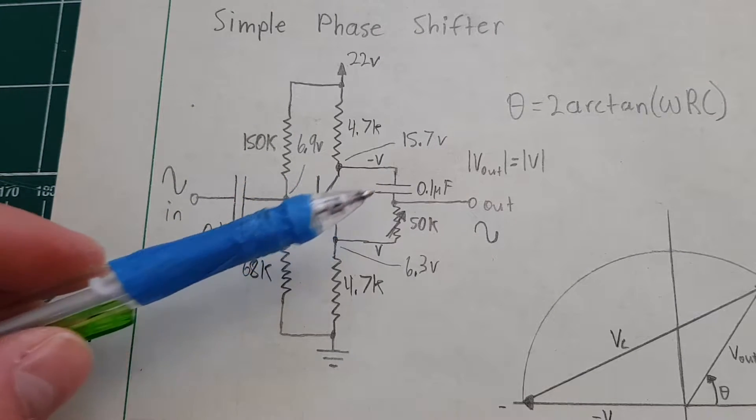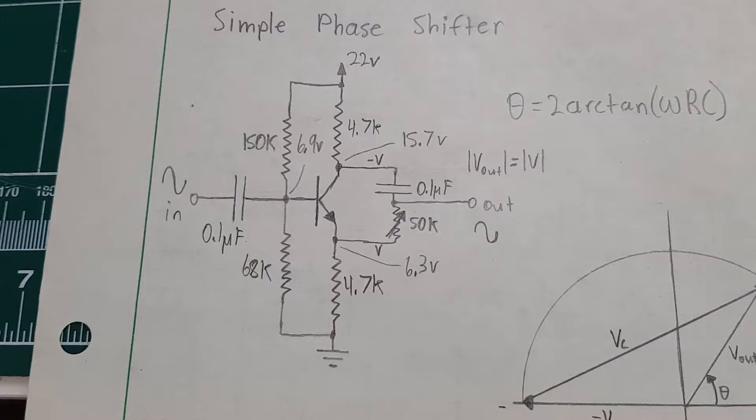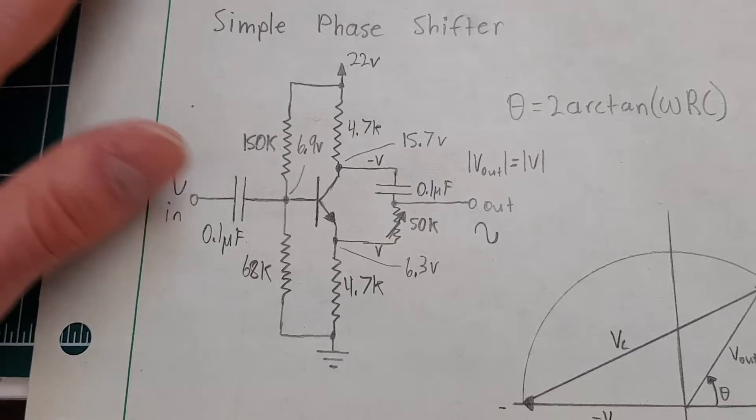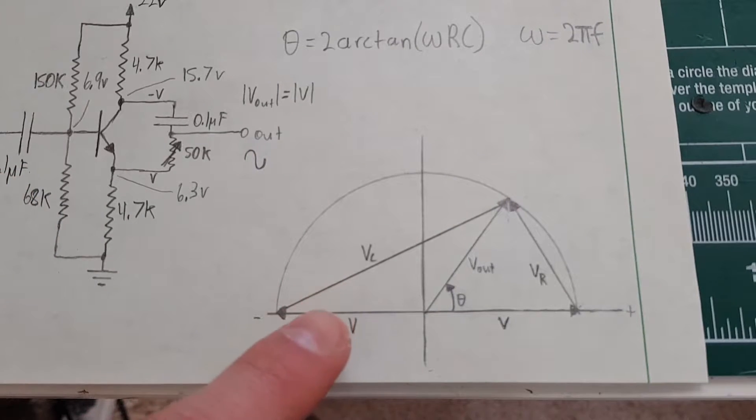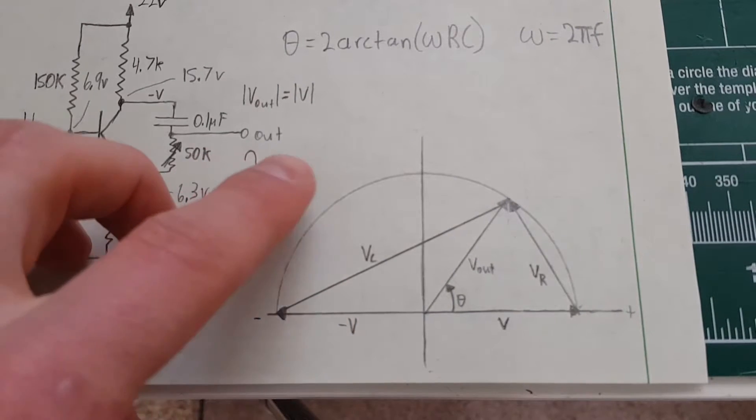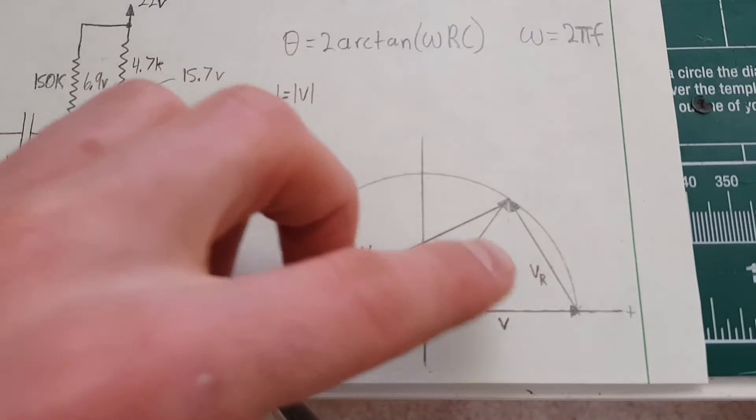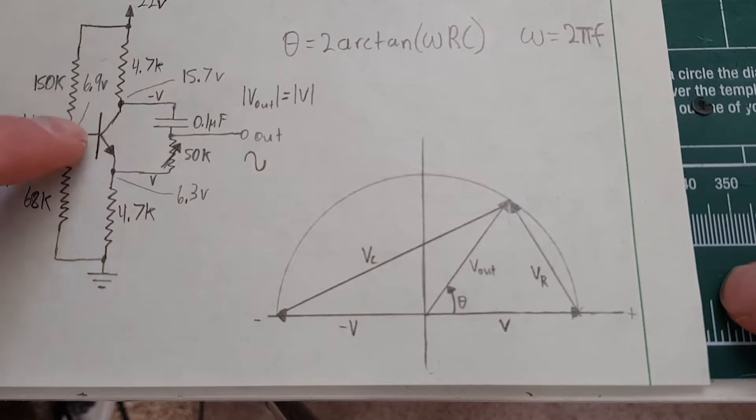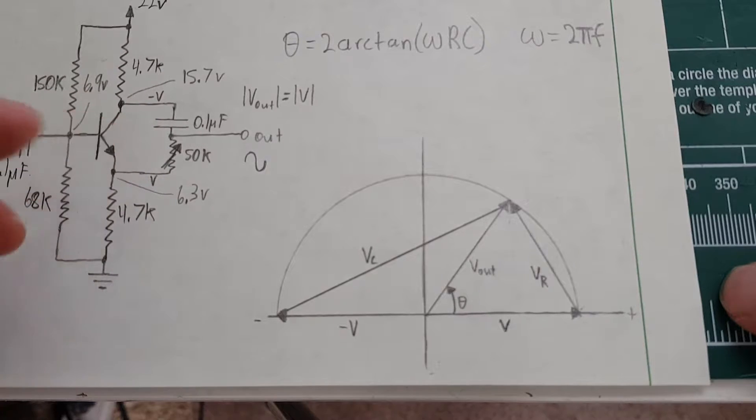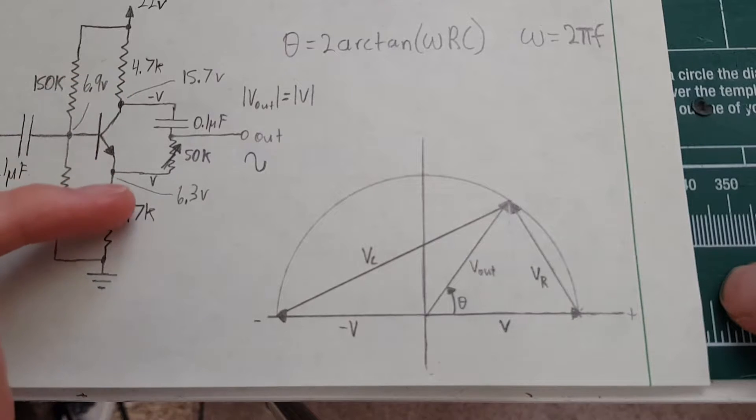The degree at which it phase shifts can be visualized with this phasor diagram. You have the voltage of the capacitor, you have the voltage of the resistor, the minus voltage and the plus voltage. The minus voltage indicating that it's phase shifted by 180 degrees at the emitter of the transistor.